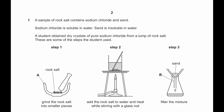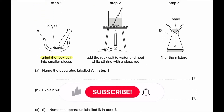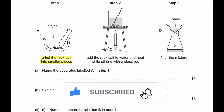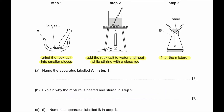Question number one. A sample of rock salt contains sodium chloride and sand. Sodium chloride is soluble in water; sand is insoluble in water. A student obtained dry crystals of pure sodium chloride from a lump of rock salt. In step one, the student grinds the rock salt into smaller pieces. In step two, add the rock salt to water and heat while stirring with a glass rod. In step three, filter the mixture to remove the sand.